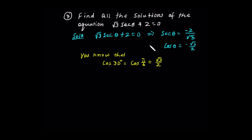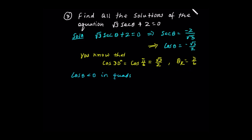This implies that cos theta is equal to negative square root of 3 over 2. We know that cos pi over 6 is square root of 3 over 2, so the reference angle theta r is equal to pi over 6. Cosine is negative in quadrants 2 and 3.